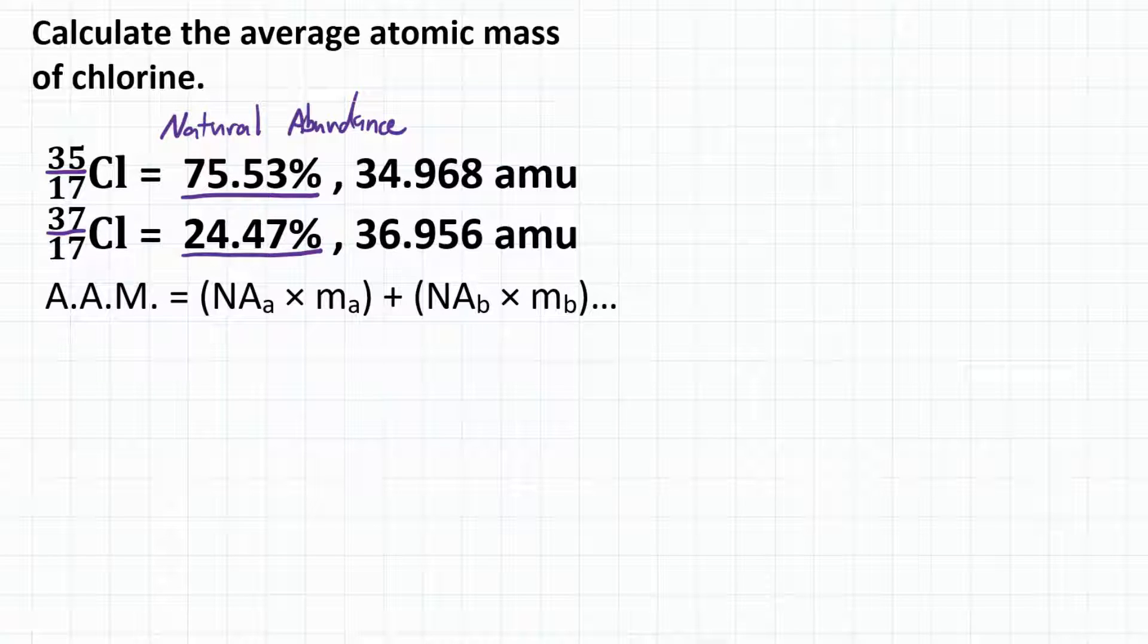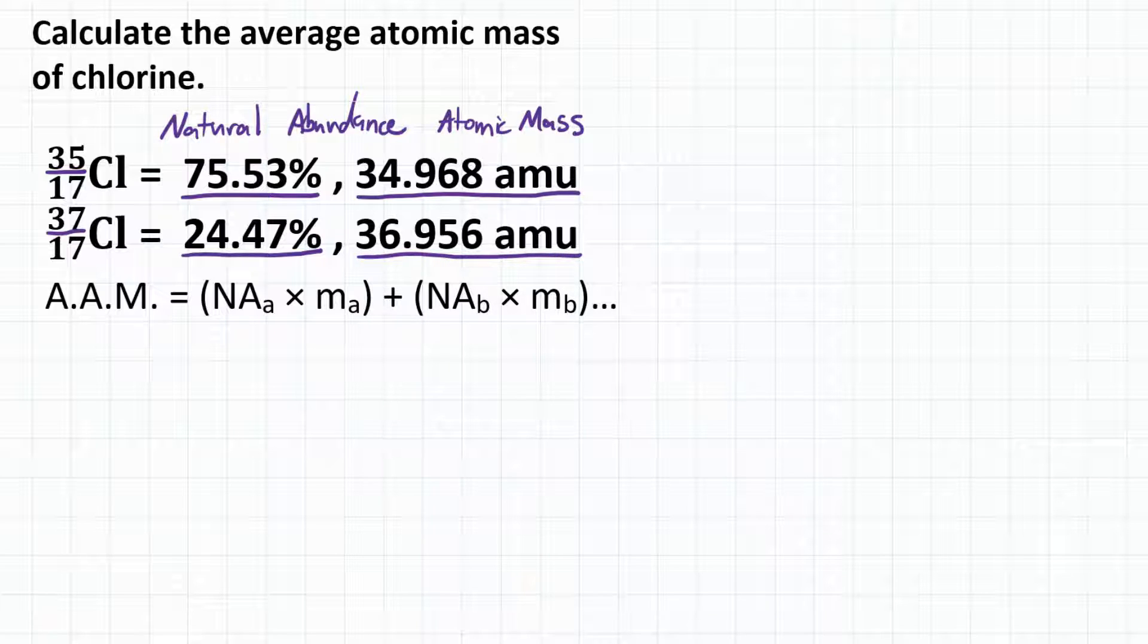So we need the natural abundance, and we also need the atomic mass of each of those isotopes. So chlorine-35 has an atomic mass of 34.968 AMUs, or atomic mass units, and chlorine-37 has an atomic mass of 36.956 AMUs. So we need those four bits of information to solve for the average atomic mass of chlorine.